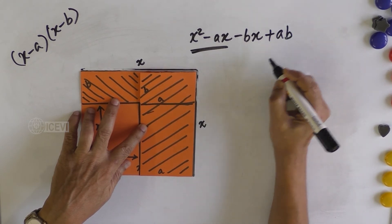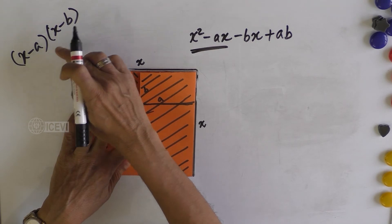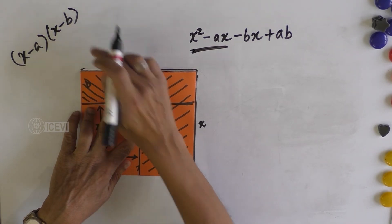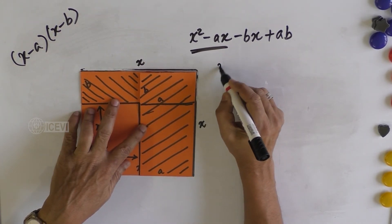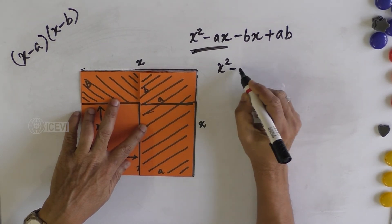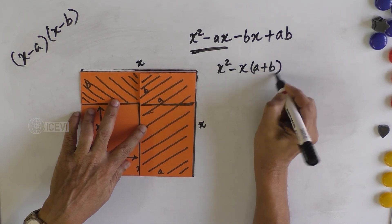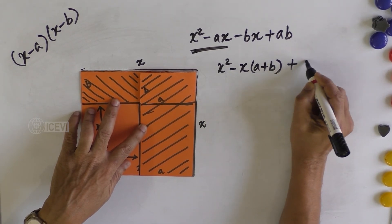So what happens? (X-a) multiplied by (X-b) is nothing but X² minus X(A+B) plus AB.